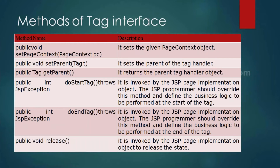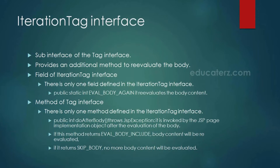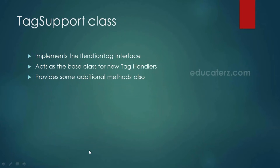IterationTag interface is the sub-interface of the Tag interface. As the name indicates, it is used to re-evaluate the body. It contains one field: EVAL_BODY_AGAIN, which re-evaluates the body content. There is only one method in this interface called doAfterBody, which executes after the evaluation of the body. If this method returns EVAL_BODY_INCLUDE, the body content will be re-evaluated; if it returns SKIP_BODY, the body content will not be evaluated.